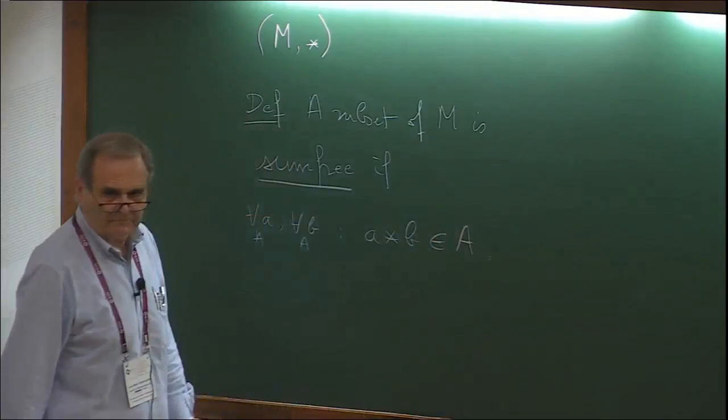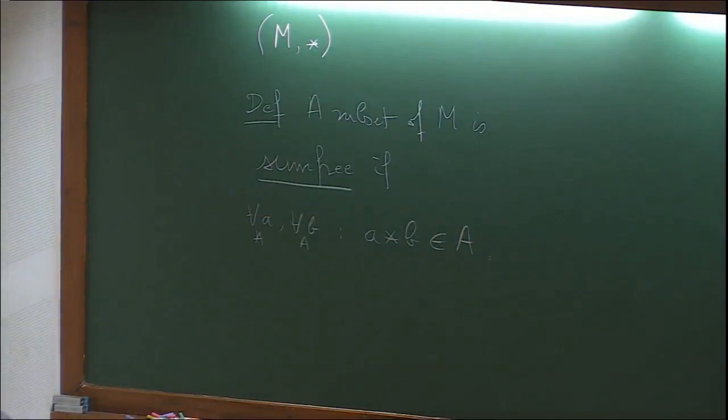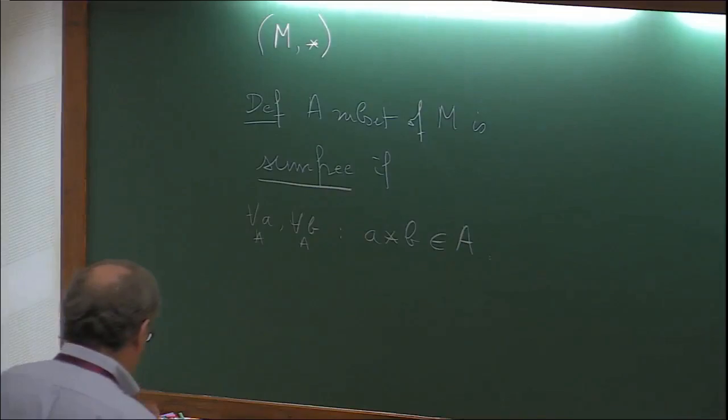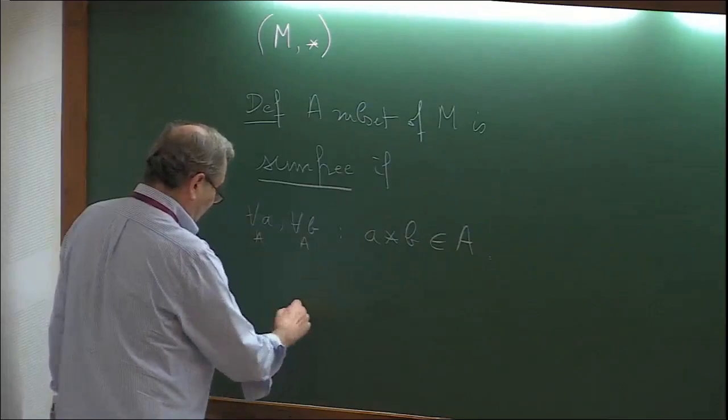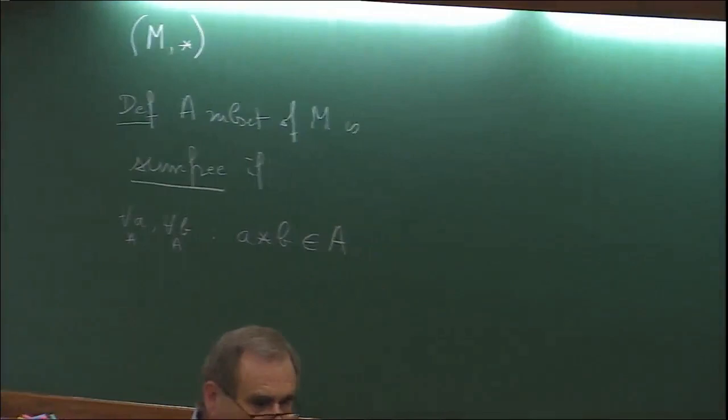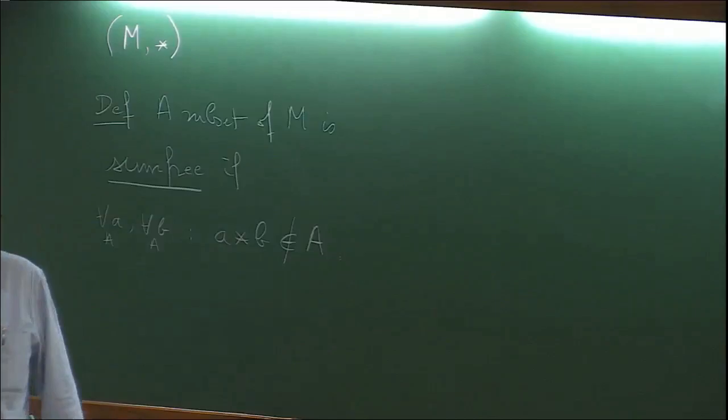We use the word 'sum' because if it is abelian, usually the star law is written as a plus law. This is a special case of something where, if gamma, alpha, beta are positive — some free sets.